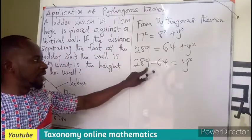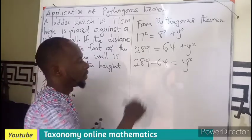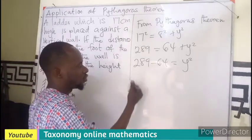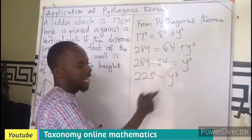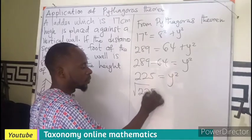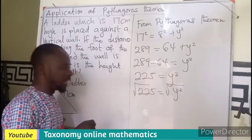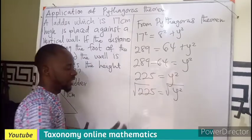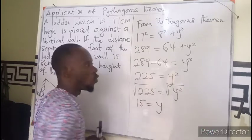If you subtract this, I believe we are going to get 225. I need Y, so I find the square root of both sides. So in that case, I'll be having 15 equals to Y.